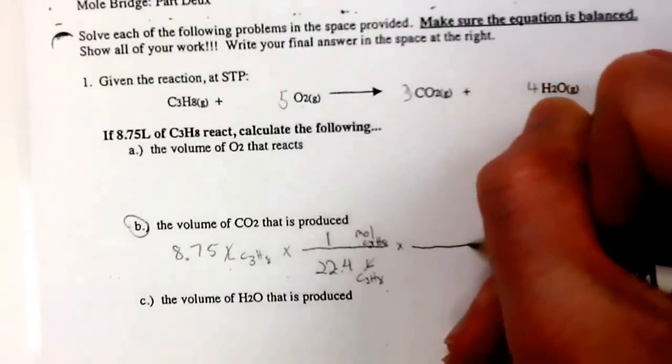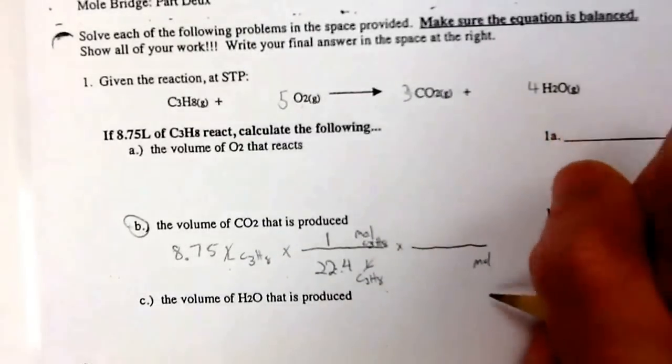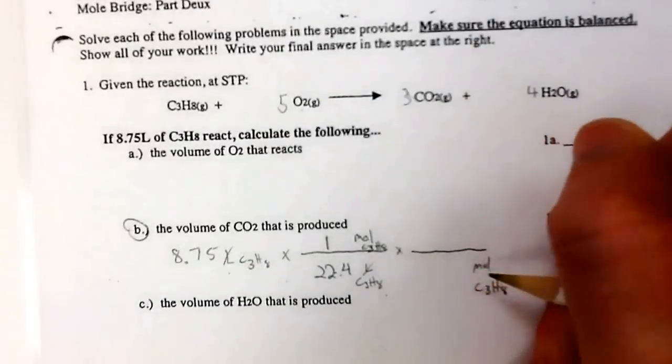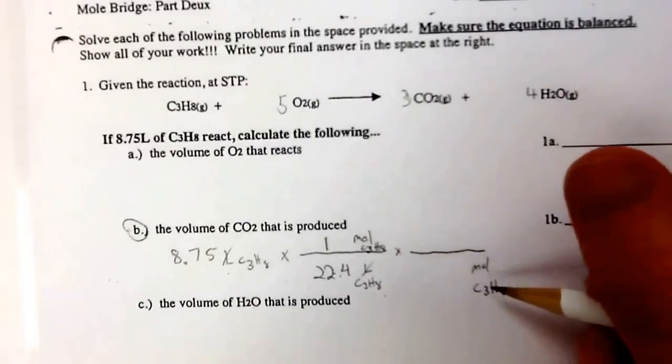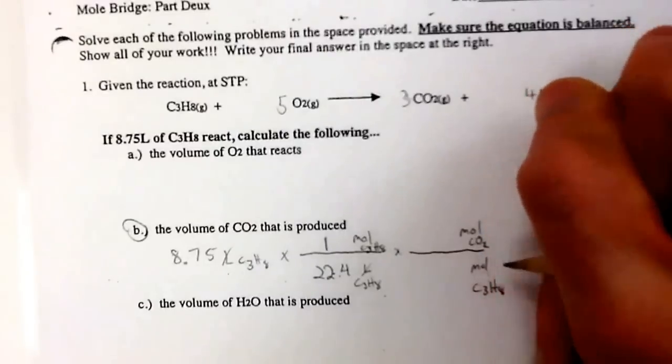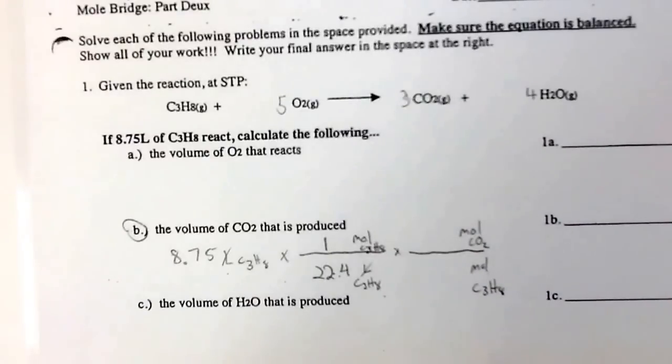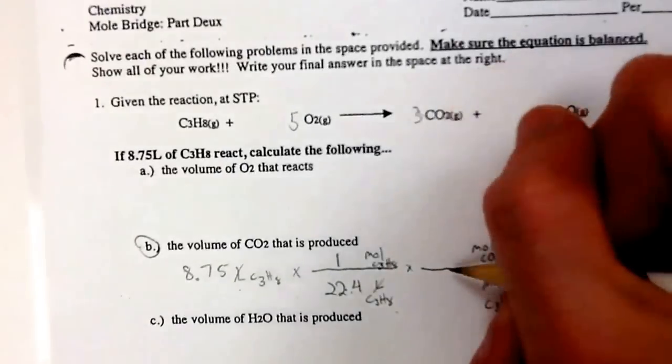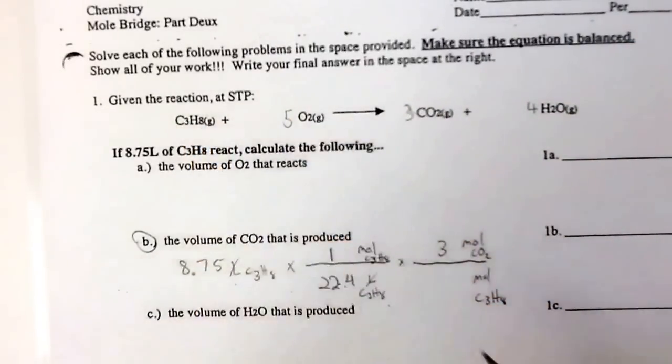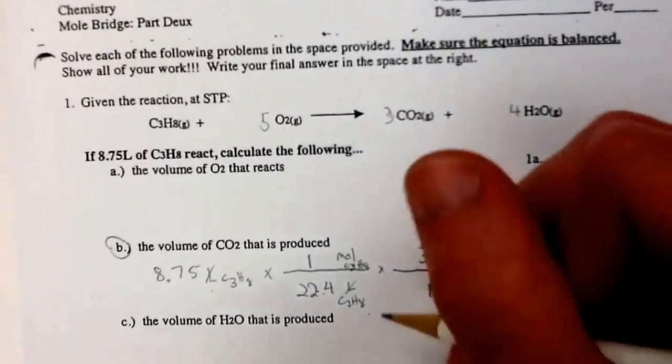So I do another times goes into, I drop my label down. And now this is your mole bridge. So I'm going from moles of C3H8 to moles of CO2. And then the numbers I get here, I look up at my balanced equation. So I have 3 for CO2, and I have 1 for C3H8. So my labels cancel.